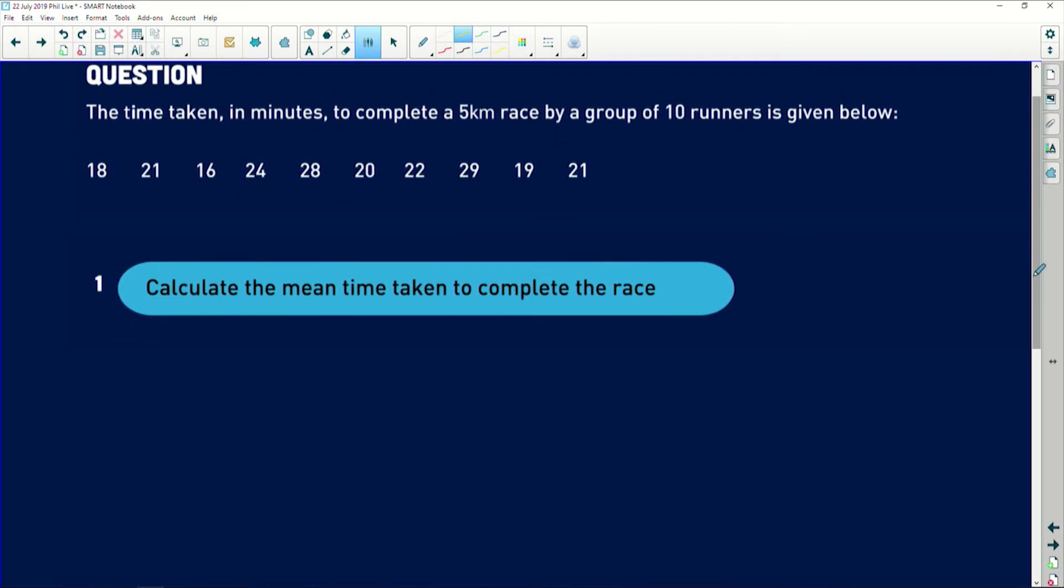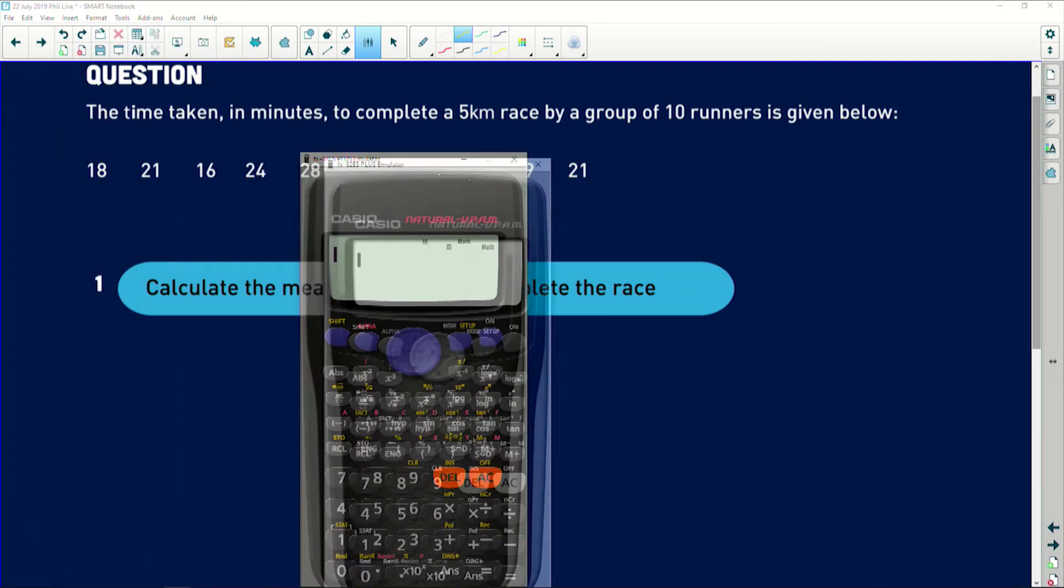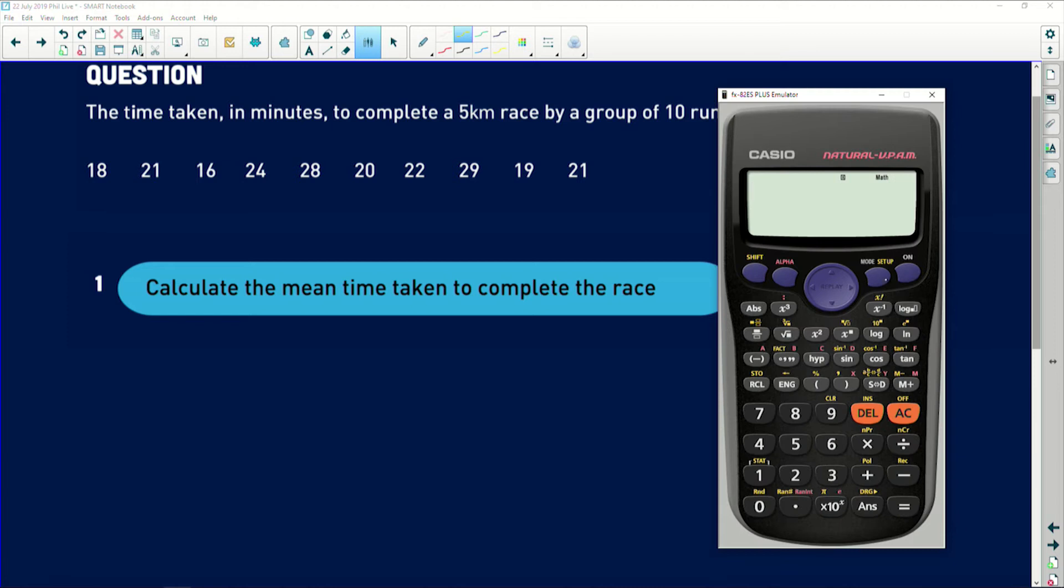Firstly, it says calculate the mean time taken to complete the race. So this is where your calculator comes in handy. What you do is you say mode, firstly, or setup. You press 2 for statistics. And then because we only have one variable here, we just have times, you would press 1 for 1 variance. And now we get given an X column and you type in each of your variables followed by an equals sign. So I'll say 18 equals, and then we start entering the rest of the data.